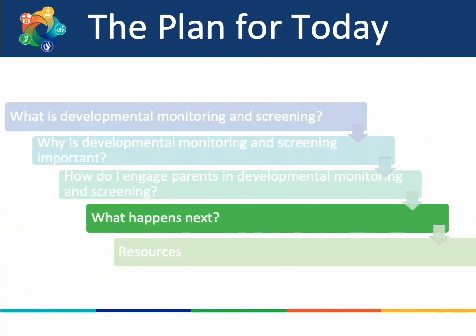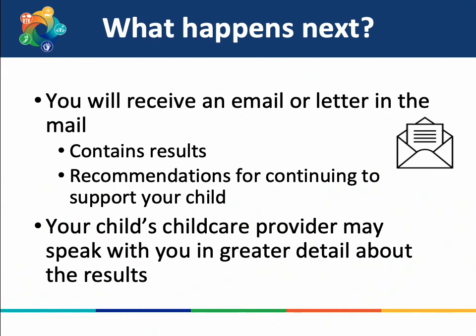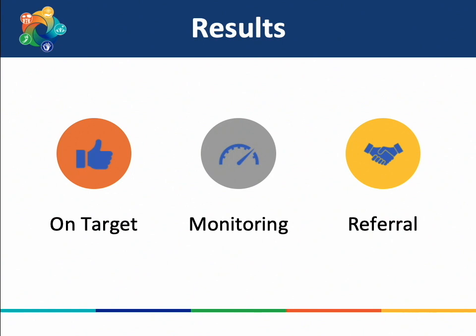After you have completed and submitted the ASQ results, they are sent to the appropriate individuals in the state of Delaware who will score the results. You will then be sent a letter in the mail or an email describing the results and appropriate recommendations. In some cases, your child's child care provider will communicate with you in greater detail about the results. There are three possible outcomes: on-target, monitoring, and referral.